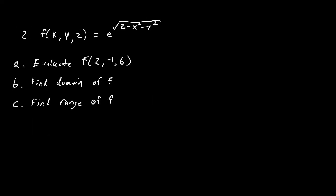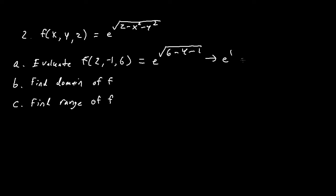For number two, f of x, y, z equals e to the power of the square root of z minus x squared minus y squared — three input variables this time. For part A, we evaluate f of 2, negative 1, 6. Plugging in: e to the square root of 6 minus 2 squared minus negative 1 squared. That's 6 minus 4 minus 1, which is 1. The square root of 1 is 1, so we get e to the first, or e.